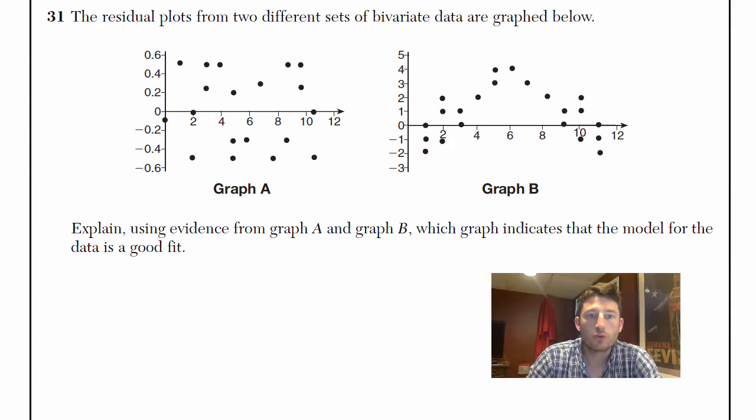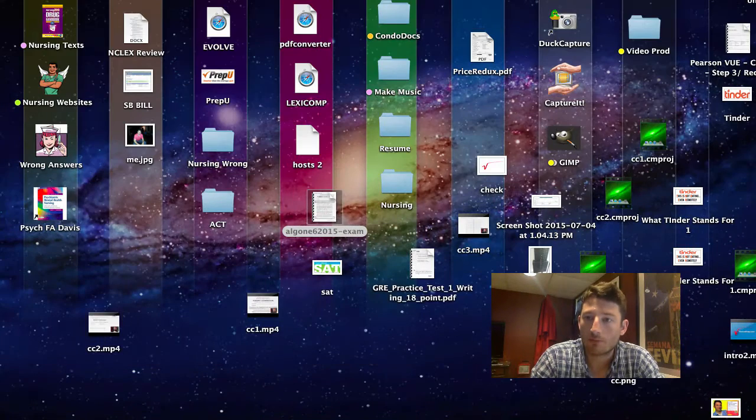Alright, number 31. The residual plots from two different sets of bivariate data are graphed below. So we got Graph A and we got Graph B. Explain using evidence from Graph A and Graph B which graph indicates that the model for the data is a good fit. I found this problem to be kind of tough and a little hard to explain.